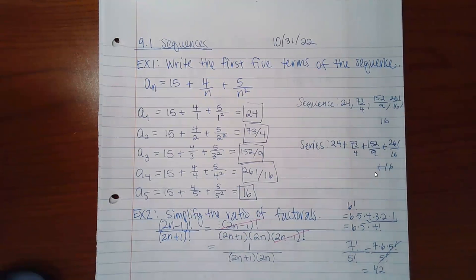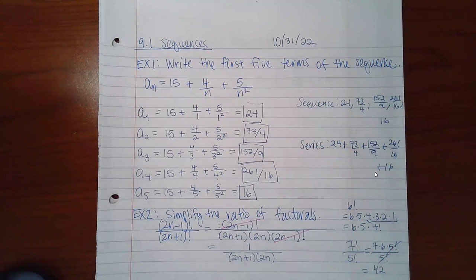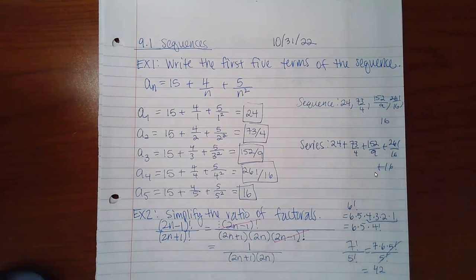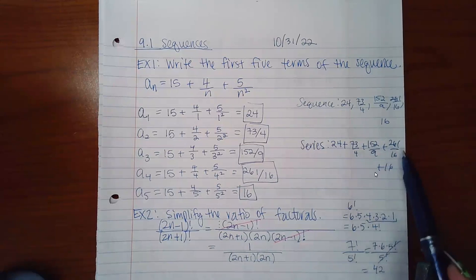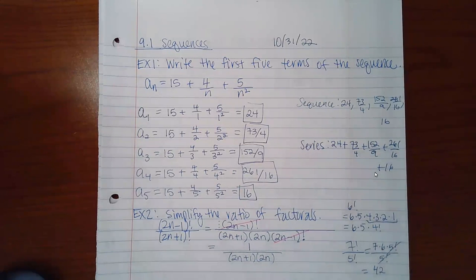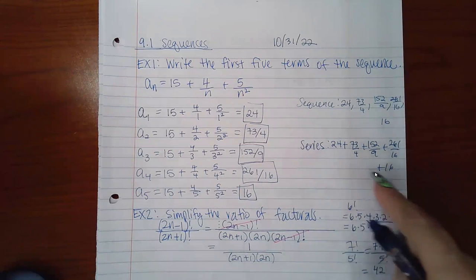The first term had to be 24, the second one 73 over four, the third one 152 over nine, the fourth one 261 over 16, and the last term was positive 16 — I just couldn't squeeze it on the page. If it were a series, or if they had told me to find the sum of the first five terms, then I would have been adding all of the terms together and would have gotten the sum — whatever the answer is for this summation.